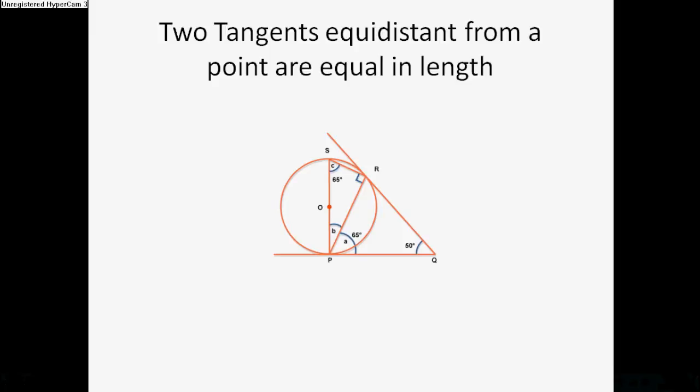Two tangents equidistant from a point are equal in length. So Q here is the point, two tangents just touching the edge of the circle there. R and P, they will be equal.